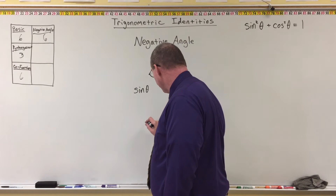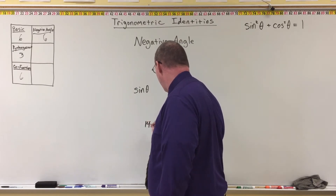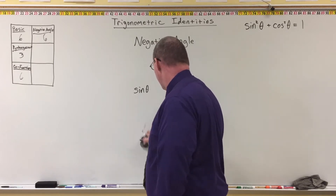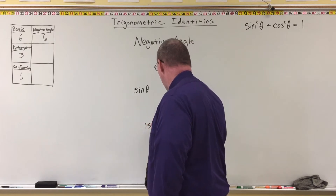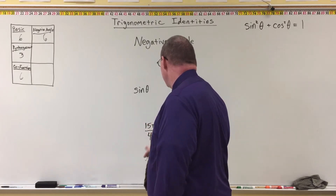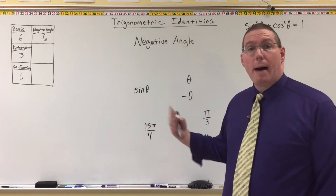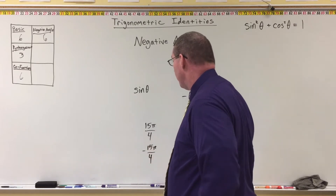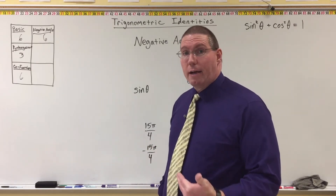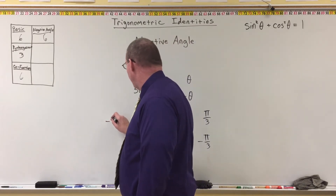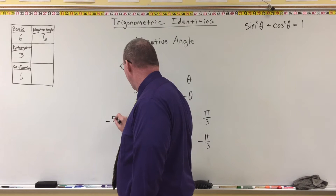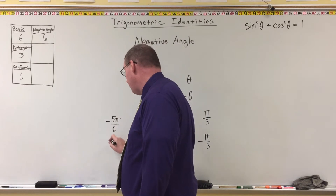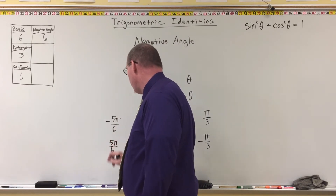So if I have the angle 15 pi over four, to get the negative angle we just multiply that by negative one, so negative 15 pi over four would be the negative angle. Now we can also get a negative angle of an angle that's already negative. If we have negative five pi over six, multiply it by negative one and we get five pi over six.